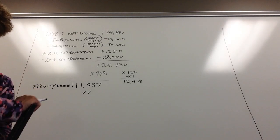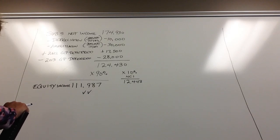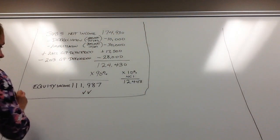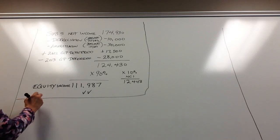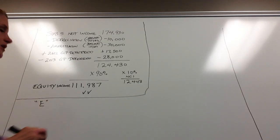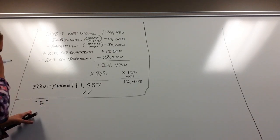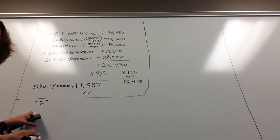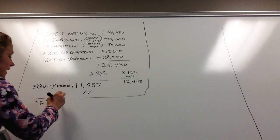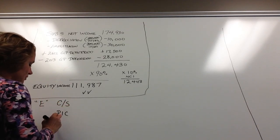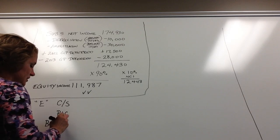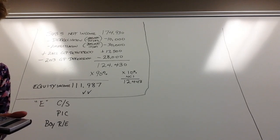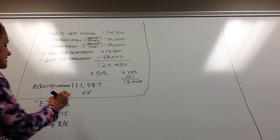Next we figure out what's in the equity investment account to make sure we've accounted for everything. We go through our regular entries, starting with the E entry. Now it gets more complex because the parent owns only 90%. We have common stock — the subsidiary's balance sheet shows $100,000 — and paid-in capital of $125,000.